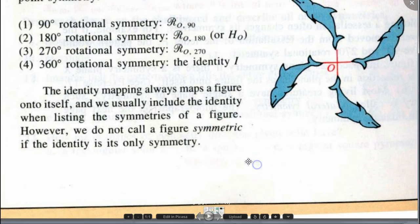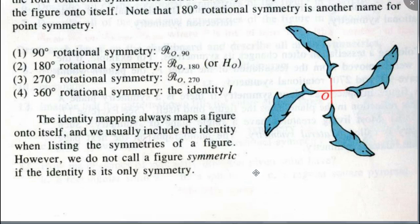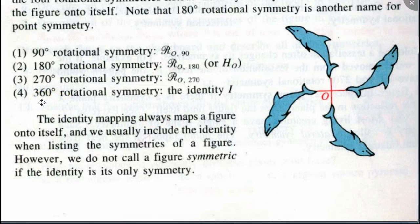The identity mapping always maps a figure onto itself. We usually include the identity when listing the symmetries of the figure. However, we do not call a figure symmetric if the identity is the only symmetry it has. Write that down. In this case, the identity mapping corresponds to a rotation of 360 degrees. But if that's the only symmetry the figure has, we don't say that it has symmetry.